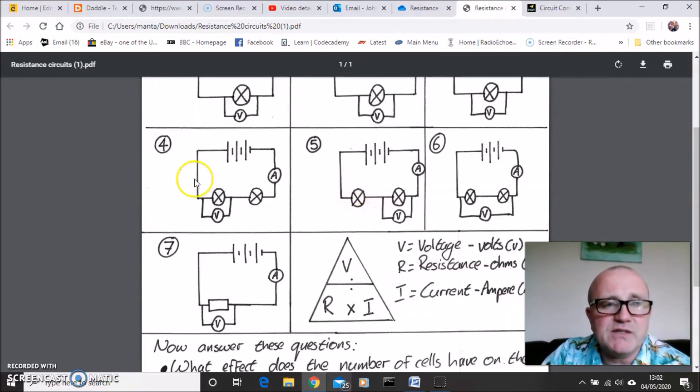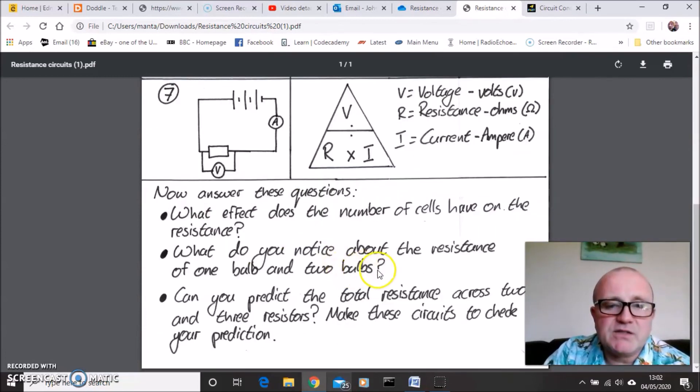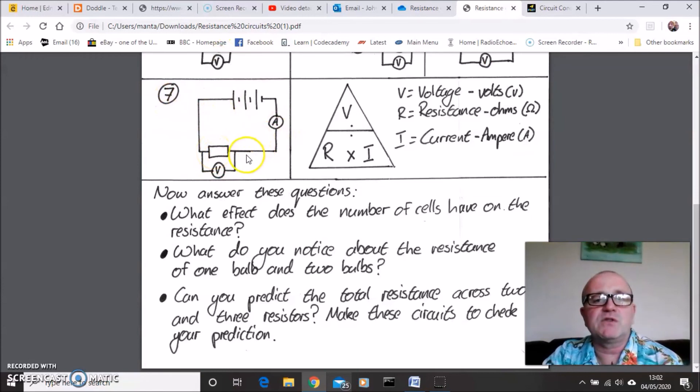And you will notice down here, look, that we've got differing number of bulbs. Can you predict the total resistance across two and three resistors? So you've made some resistors. Can you predict what the resistance would be if we added a second resistor and a third resistor?